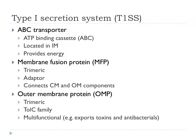The last system to talk about today is the type 1 secretion system. This system spans the whole cell envelope and has three components. There is an ABC transporter located in the inner membrane — ABC stands for ATP-Binding Cassette. These mediate not just protein secretion but the translocation of all sorts of molecules, peptides, and small molecules. It is the ABC transporter that energizes the process through the hydrolysis of ATP.